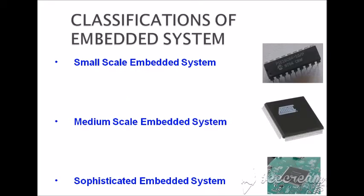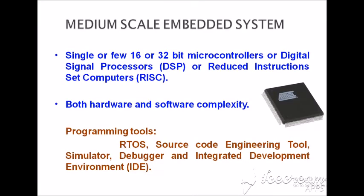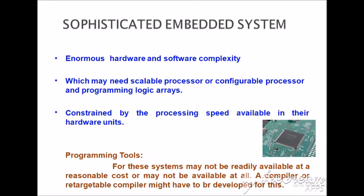There are three types of embedded systems: small scale, medium scale, and sophisticated. Small scale uses 8-bit or 16-bit microcontrollers with little hardware and software complexity, generally uses C for development, and has lower power dissipation. Medium scale uses 16-bit or 32-bit microcontrollers with both hardware and software complexity and can be programmed using RTOS or real-time environments like Arduino IDE. Sophisticated embedded systems have enormous hardware and software complexity, use scalable processors with constrained speed, and can be programmed using targetable compilers.